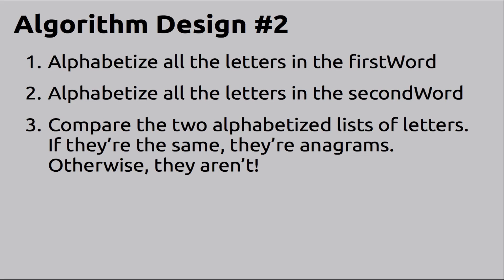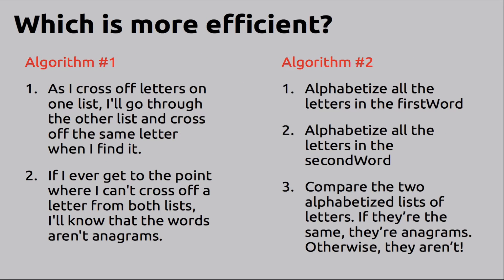Here's another possibility. I'll sort the letters in each word alphabetically and then go through both lists one letter at a time. If I find any two letters that don't match, I'll know that the words aren't anagrams. You might wonder which of these two strategies is more efficient — which one takes less time. It seems like having to sort through each of the lists to get them in order in the first place would take a whole lot of time by itself, and then you'd still have to go through and check off the letters one at a time.